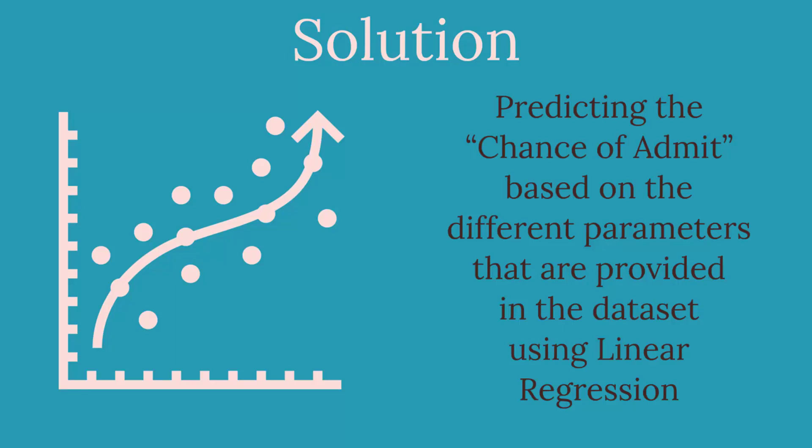Based on the data that we have, we will split our data into training and testing sets. The training set will have features and labels on which our model will be trained. The label here is the chance of admit. From a non-technical standpoint, the label is basically the output that we want, and features are the parameters that drive us towards the output.